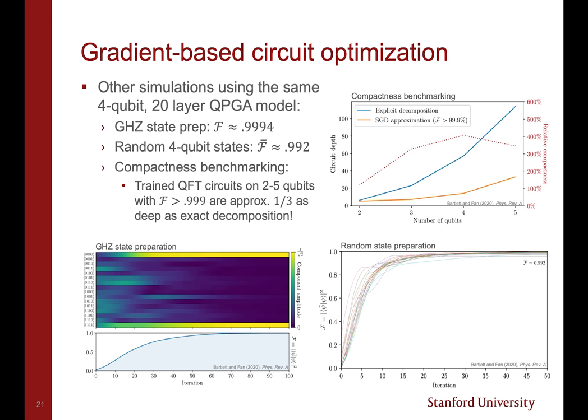Other simulations we performed using the same 4 qubit 20 layer QPGA are shown here. The lower left depicts training the model to implement a GHZ state, which reaches a final fidelity of 99.94%. The lower right depicts training an ensemble of randomly sampled 4 qubit states. The QPGA reaches an average fidelity of 99.92%, which indicates that a QPGA of this depth is sufficient to create arbitrary 4 qubit states with high fidelity.